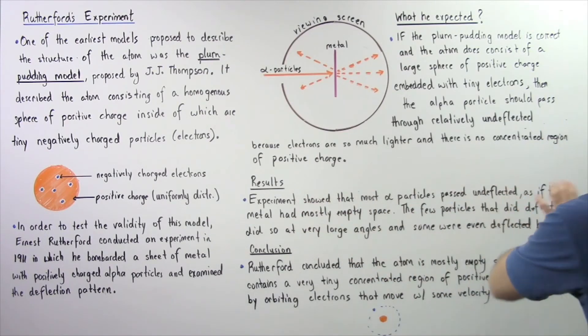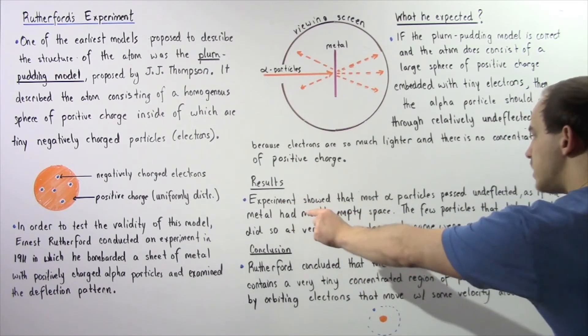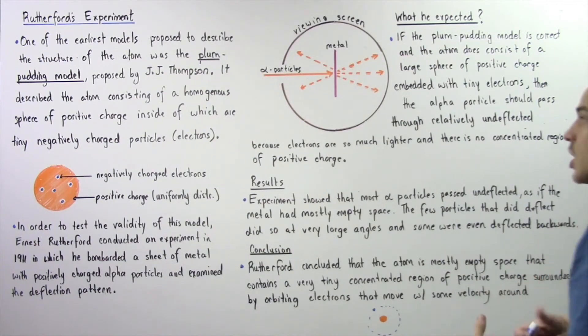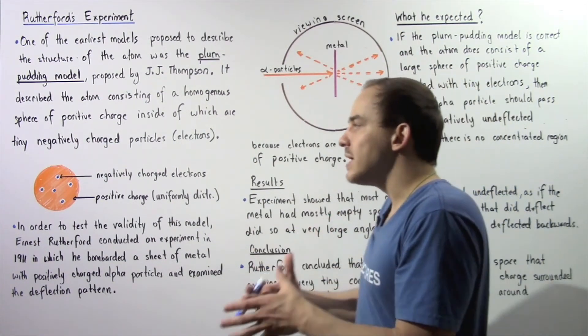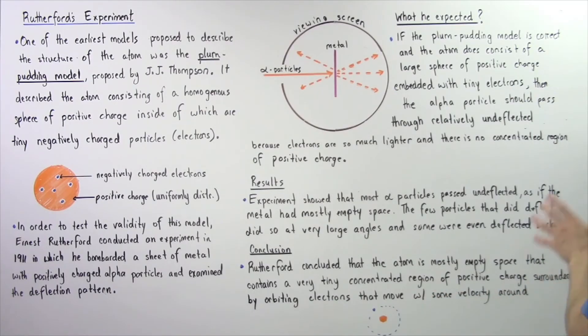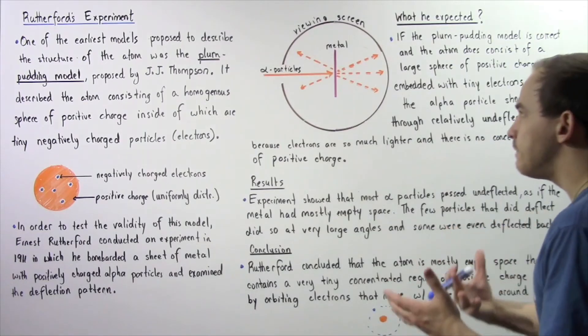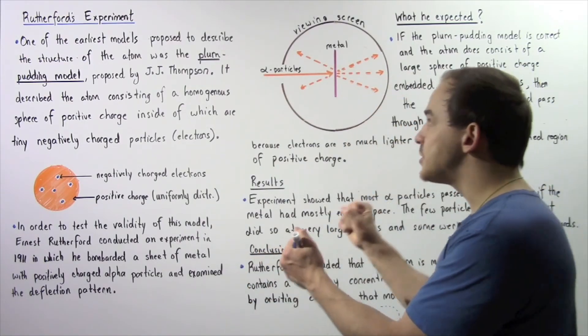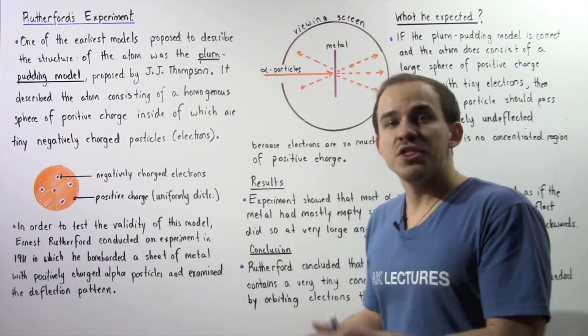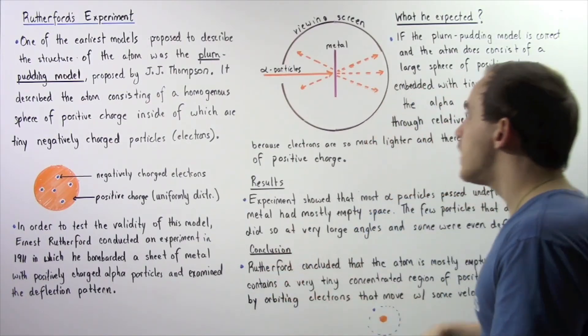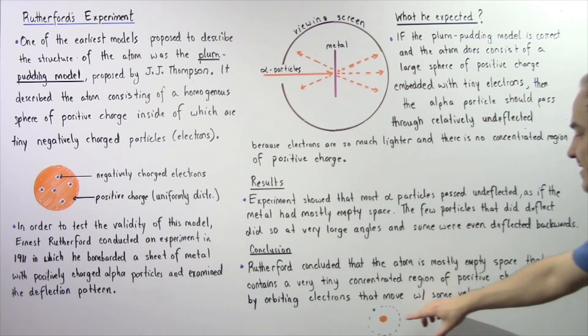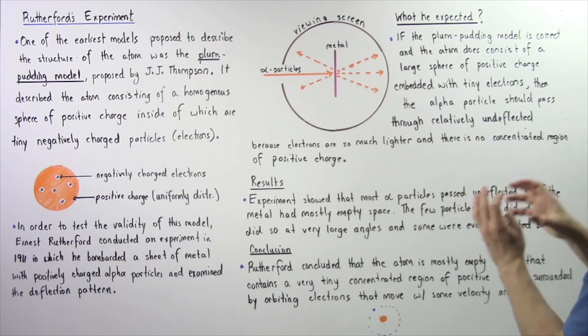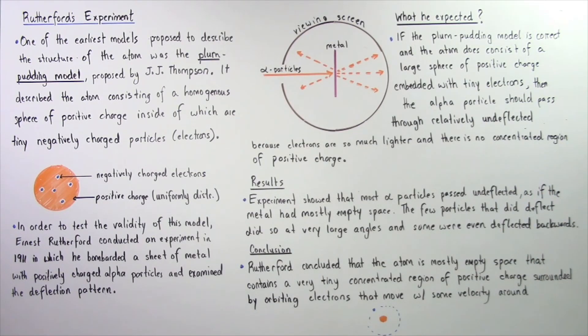Let's look at the results once more. The results showed that most alpha particles passed through undeflected, which means most of the atom must consist of empty space. The alpha particles that did deflect deflected at very large angles, which means the collision took place with a concentrated region of positive charge. That's exactly why he concluded that there is a center that contains a very concentrated region of positive charge.